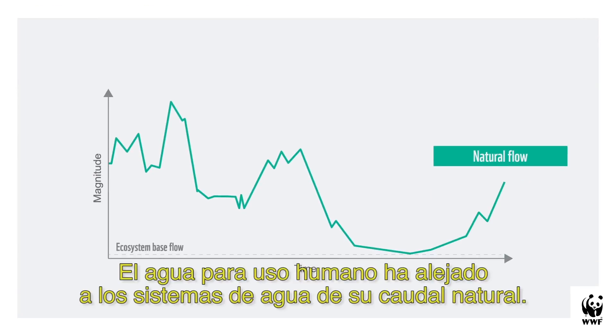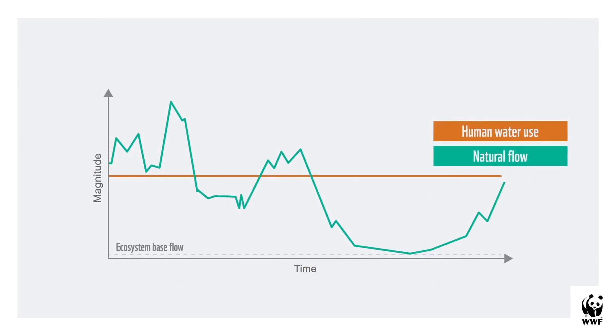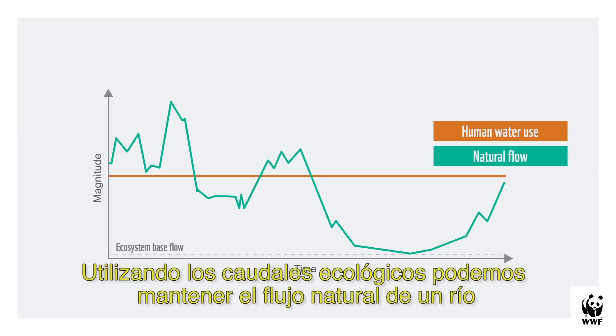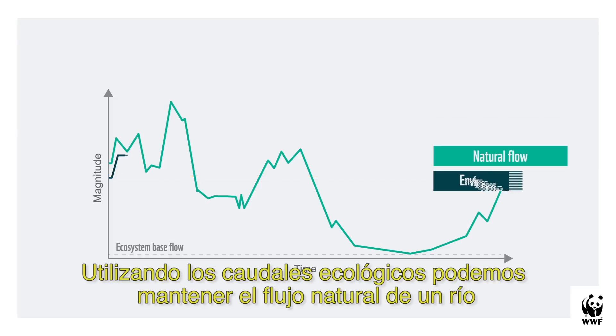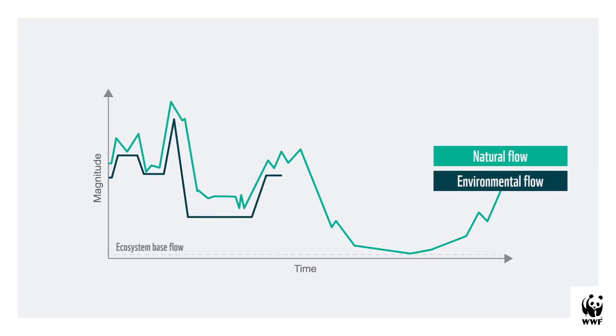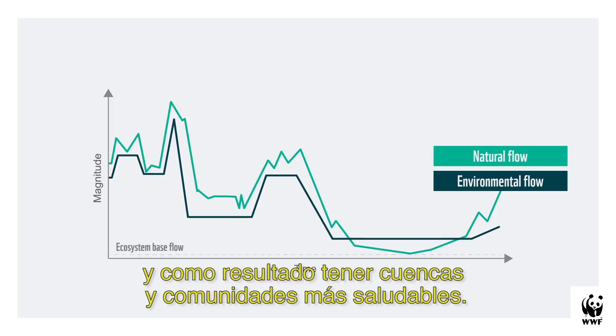Human water use has moved water systems away from their natural flows. By using environmental flows, we can better reflect the river's natural flow, resulting in healthier watersheds and healthier communities.